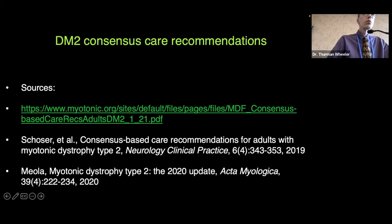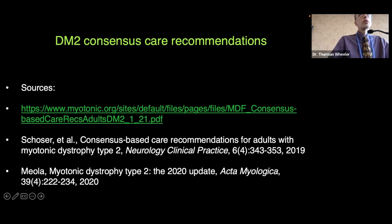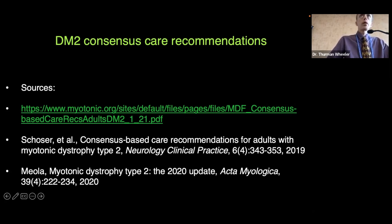Q: Is there any correlation between rotator cuff repair and DM2? My cousin and I both have DM2 and both have had shoulder surgery with tears in addition to weakness. A: It might be that the weakness of the muscle increases the likelihood of trauma that could result in a tear requiring repair. The rotator cuff would be involved in DM2 fairly early, so the decreased power of the muscle could result in injury that might require repair — so it probably would be related to DM2.